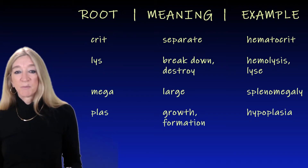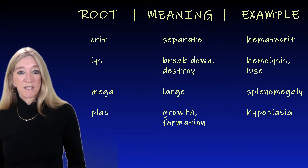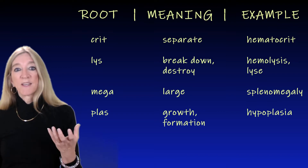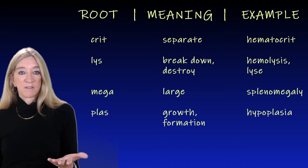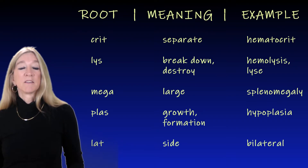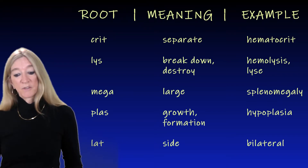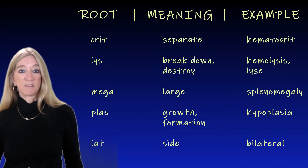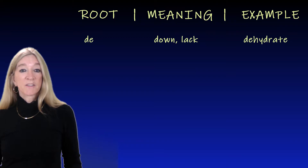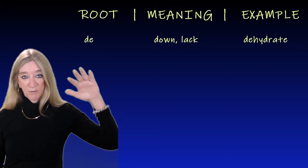The next root is 'plas,' meaning formation or growth. Hypoplasia is the underdevelopment or incomplete development of a tissue or organ. The next root, 'lat,' meaning side. An example is bilateral. Of course, the human body for the most part has bilateral symmetry — the same two things on each side. The next root, 'de,' meaning down or lack, as in dehydrate — the water level going down.